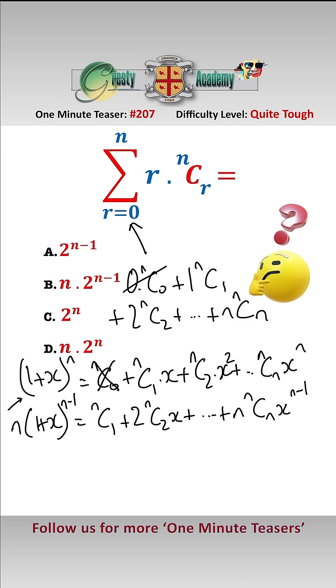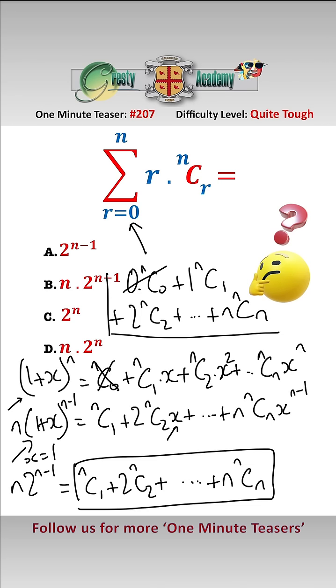Now let's stick X equals 1 in there and we get N times 2 to the power of N minus 1 equals NC1, add 2 NC2 (X here is just 1), and so on, add N times NCN. And this is exactly the same as this, so therefore the sum is N times 2 to the N minus 1, which is answer B.